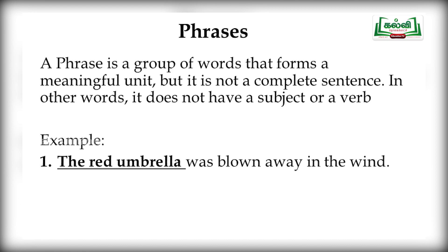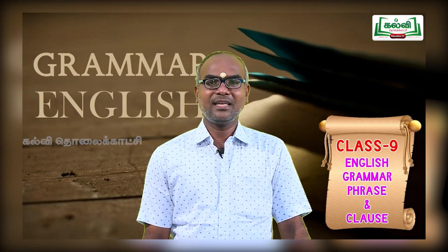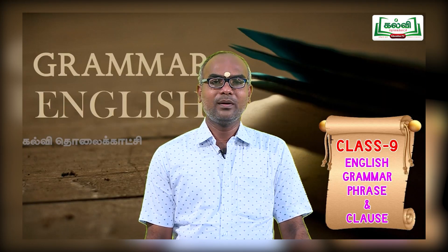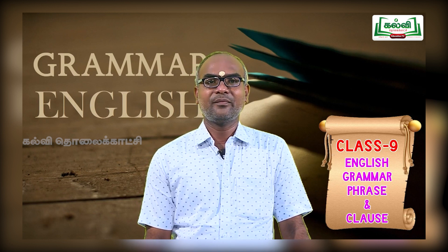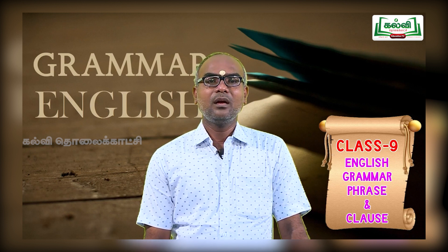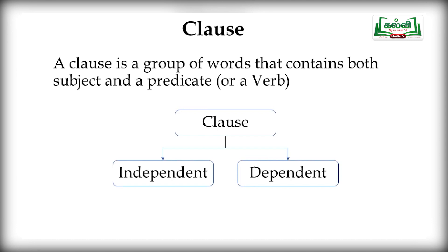First we will take clause. What is a clause? A clause is a group of words that contains both a subject and a predicate. Predicate is nothing but a verb. A clause is a group of words that contains both a subject and a predicate or a verb. Simply, a simple sentence is a clause. The clause is divided into two: independent clause and dependent clause.